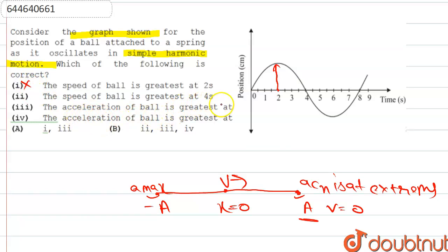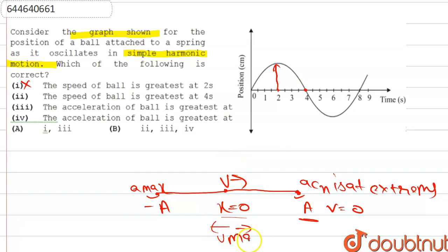The second option states that the speed of the ball is greatest at four seconds. At four seconds, the ball is at zero position — the mean position. At this point, velocity is maximum. So the second option is correct.